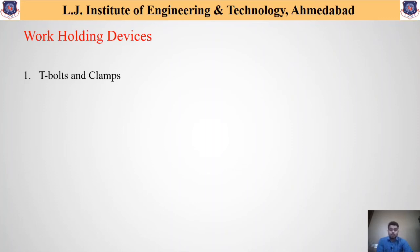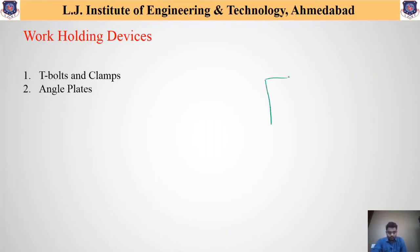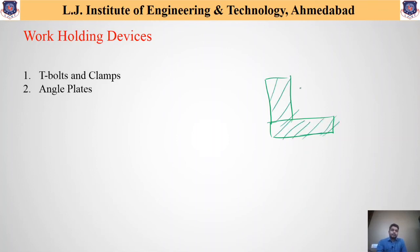The second work holding device is angle plates. These angle plates are fixed to the machine and are used when any workpiece needs to be fixed perpendicular to another component or part.